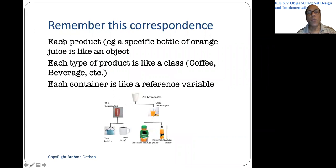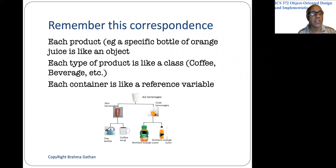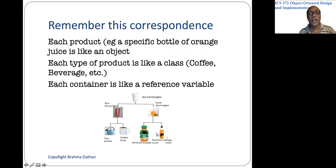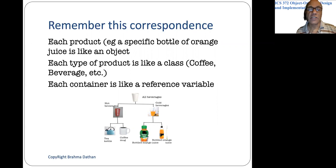Let's see why we are doing this. Each product like mango juice or coffee is like an object — those are the things we are really interested in. We are never really interested in the cups, kettles, mugs, or bottles. They are there only for the purpose of drinking or making coffee, tea, or juice.